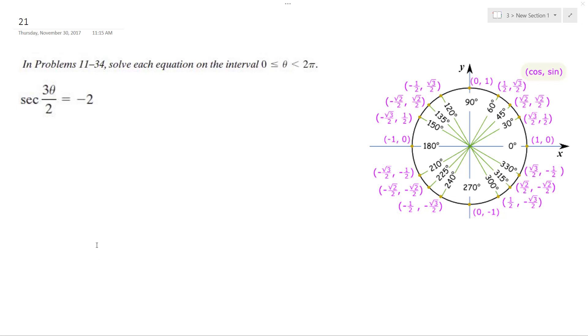Alright, so solving this problem, I've got secant of 3 theta divided by 2 equals negative 2.